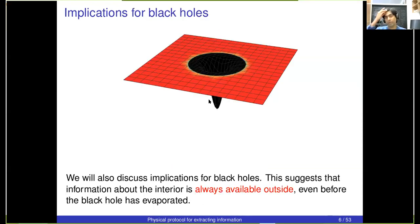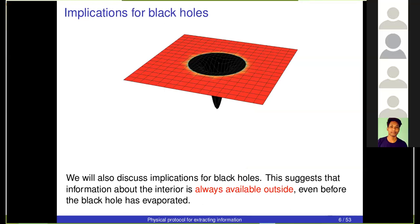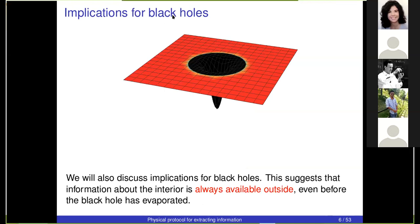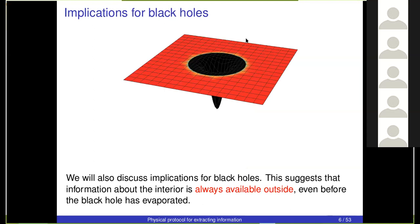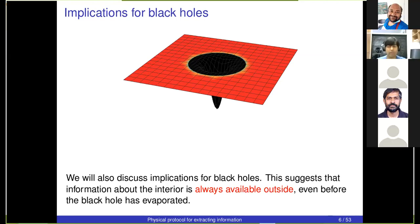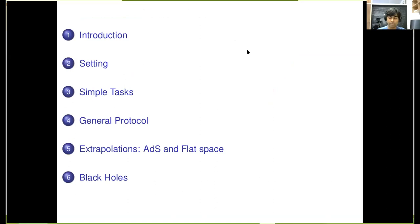This result also has implications for other settings, including black holes. I won't focus on that in this talk, but towards the end I'll describe some implications for black holes. The main implication is that information about the interior of a black hole — if you have a black hole spacetime with some interior — is accessible in the exterior red region even before the black hole has evaporated. That's again a somewhat surprising claim, but I'll try to make it more robust as we go along.